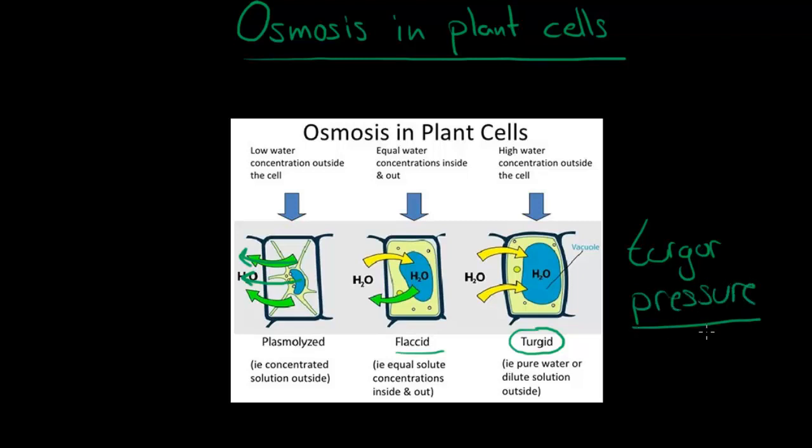Now this pressure is very important in plant cells and generally plant cells must be found in this form, in a turgid form, where more water will move inside so lots of pressure will get created in the inside.